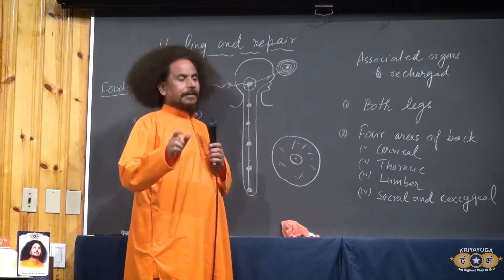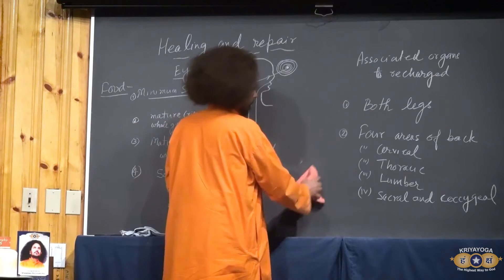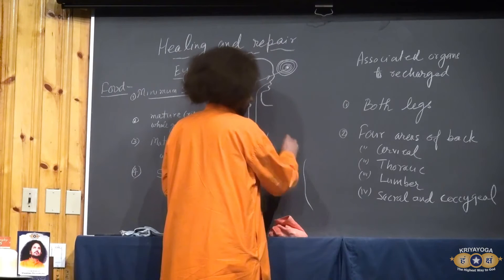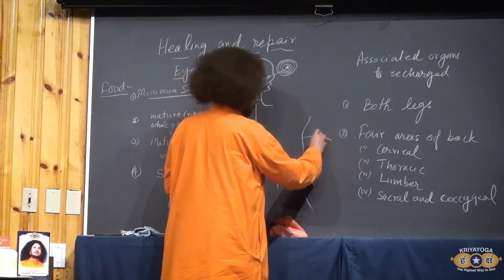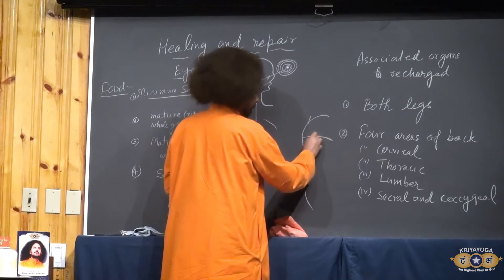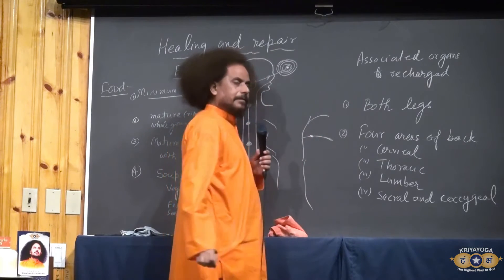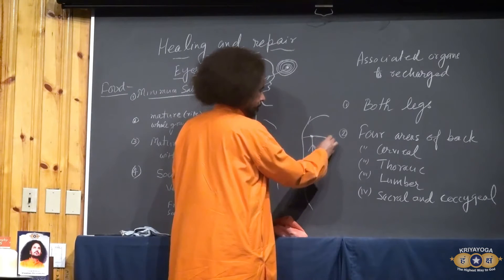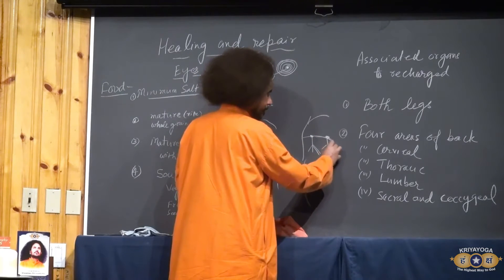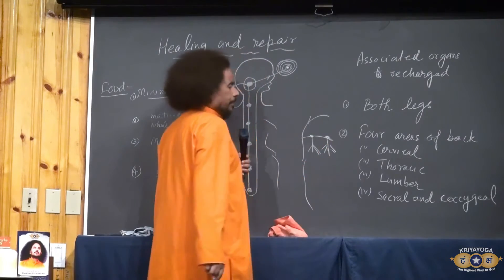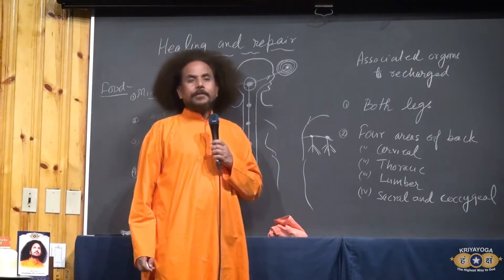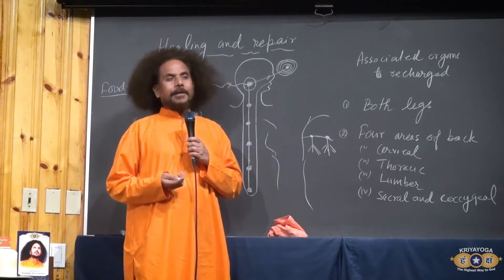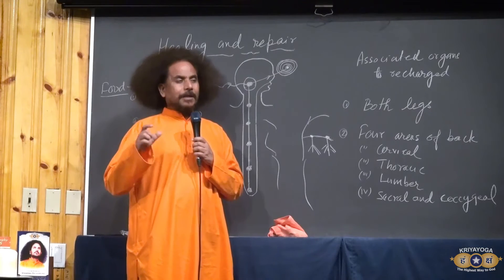But you see, in the banyan tree, each branch, suppose this is the root of the banyan tree, and this is the stem, branch is coming like this. You will find from each branch, nucleus is there. This nucleus is producing root. Here is the nucleus producing root. It means if you can increase power of nucleus in all over the body parts, you can maintain it as Mahavatar Baba is maintaining.